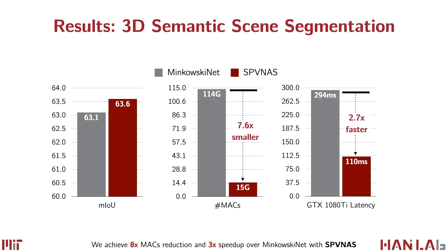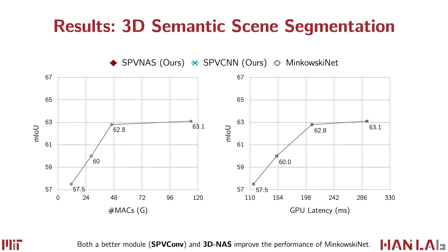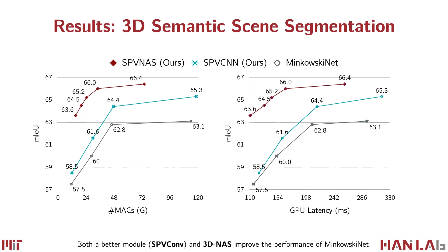We demonstrate the results of our SPV-NAS built from SPV-Conv and the 3D NAS pipeline. We achieve 8 times MACs reduction and 3 times speedup over the previous state-of-the-art MinkowskiNet, while preserving higher accuracy. This allows our model to be more efficiently deployed on real self-driving cars. By replacing sparse convolution in MinkowskiNet with our SPV-Conv, we improve the trade-off curve from the gray line to the green line, achieving up to 2% IOU boost under all computation budgets. We then further boost the performance using 3D NAS, lifting the trade-off curve from the green line to the red line, with up to 5% improvement under the same MACs or latency constraint.